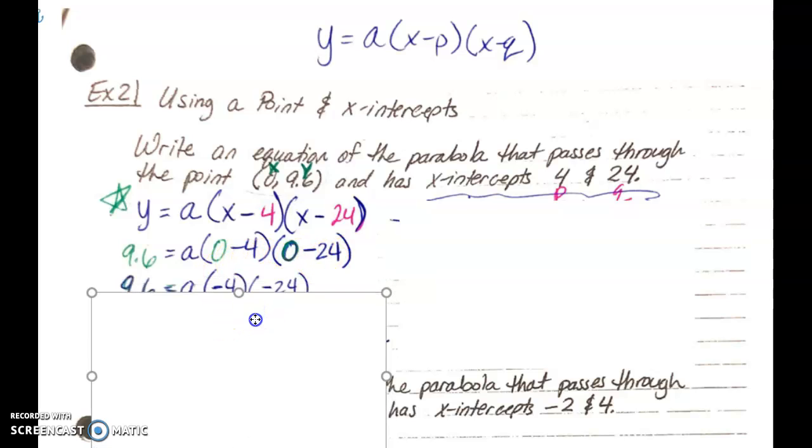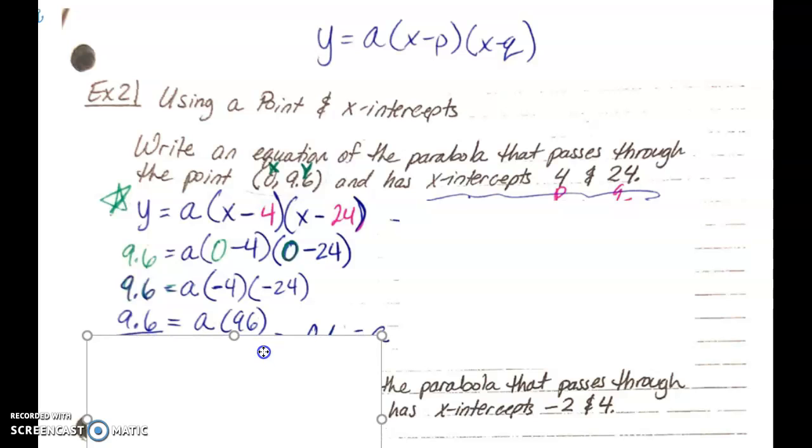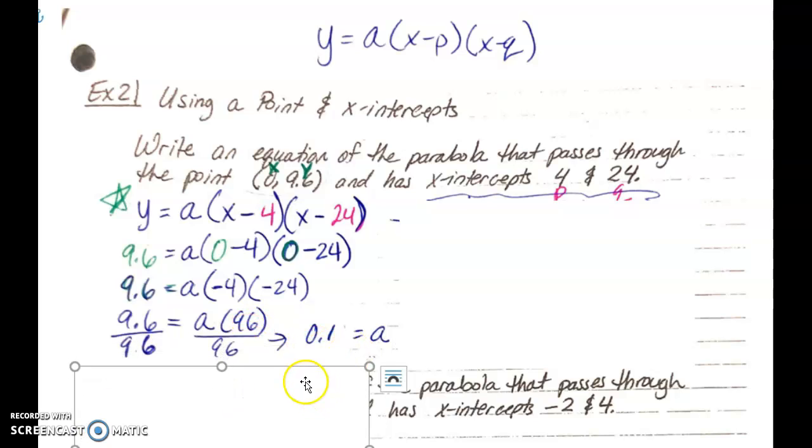Simplify within the parentheses, 0 minus 4 is negative 4, 0 minus 24 is negative 24, so you have 9.6 is equal to a times negative 4 times negative 24. Multiply these two together to simplify, and you get 9.6 is equal to a times 96. Positive 96, because negative 4 times negative 24 is positive. This is the same thing as 96a. So I'm going to divide by 96 on both sides, because I want to get a by itself and it's being multiplied. So I divide by 96 on both sides, and that gives me here that a is 0.1. So 9.6 divided by 96 is 0.1.